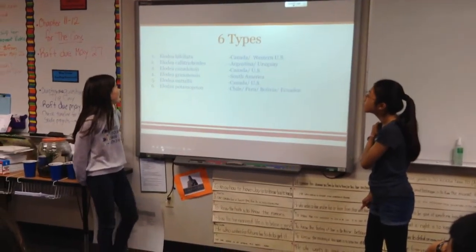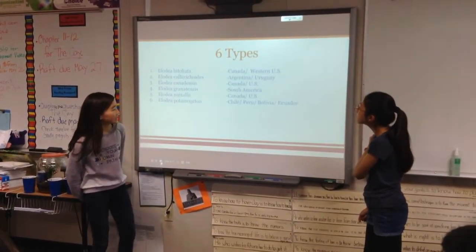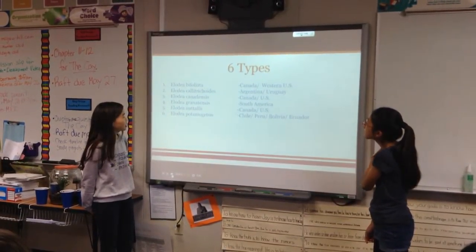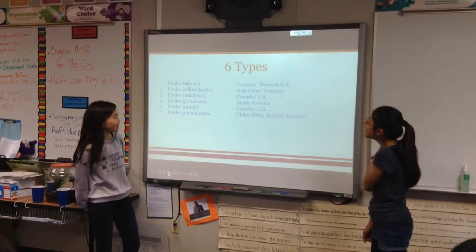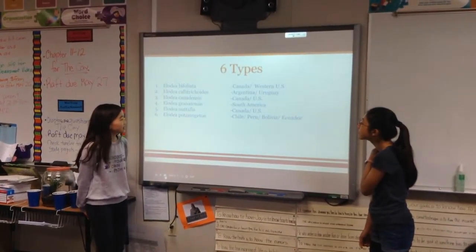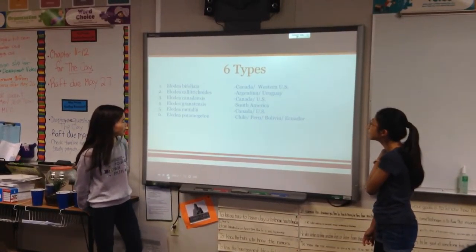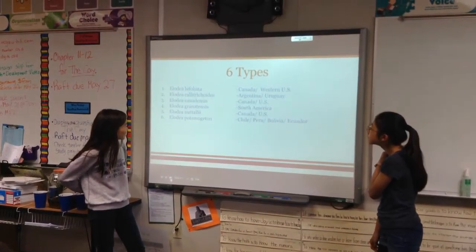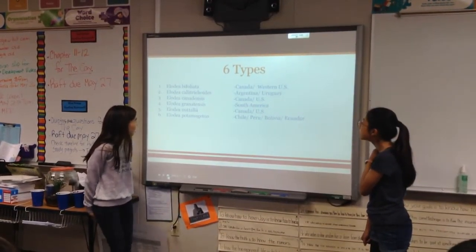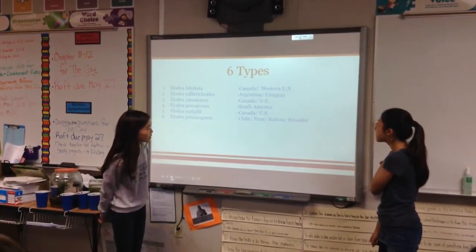The six types of Elodia are: Elodia bifoliota, found in Canada and Western USA; Elodia calatritoidus, found in Argentina and Uruguay; Elodia canadensis, in Canada and the U.S.; Elodia granatensis, in South America; Elodia nutali, in Canada and the U.S.; and Elodia patamagatin, found in Chile, Peru, Bolivia, and Ecuador.